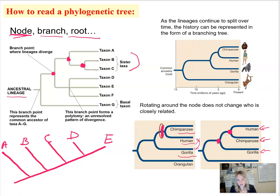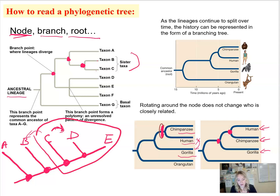Here's another example: we have a small cladogram with species A, B, C, D, and E. You can see D and E share a common ancestor, and there are additional common ancestors as we progress back in time. Is C more closely related to D or to B? C is more closely related to D because this entire grouping includes the common ancestor shared by C and D. There is a more distant common ancestor for B, which is why C and D are more related than C and B.